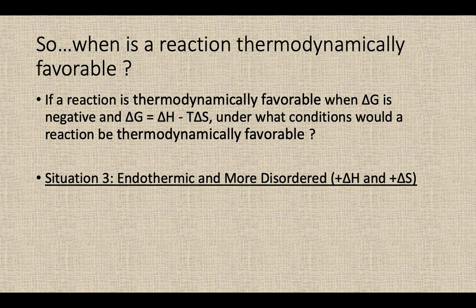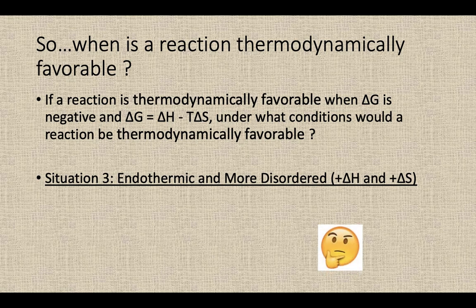What about scenario number three? What if it's endothermic — positive delta H — taking heat energy from the surroundings to make the reaction happen, but producing something more disordered? So two moles of reactants to six moles of products, or solid to gas — a positive delta S. But we require heat energy from the surroundings endothermically. We have a math problem where delta H is positive, and in order for the reaction to be thermodynamically favorable to the product side, we need a negative delta G. We have to look at under what temperatures we could get a negative G value.